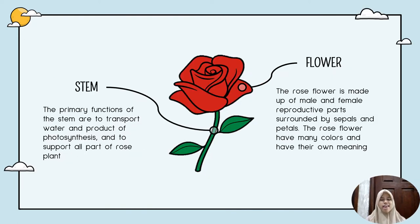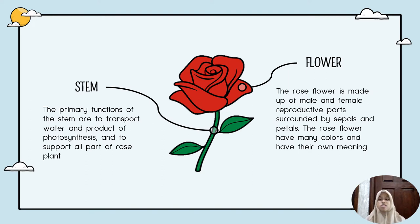The first part of a rose is the stem. The primary functions of the stem are to transport water and the products of photosynthesis, and to support all parts of the rose plant. The second part is the flower. The rose flower is made up of male and female reproductive parts surrounded by sepals and petals. The rose flower comes in many colors and each color has its own meaning.